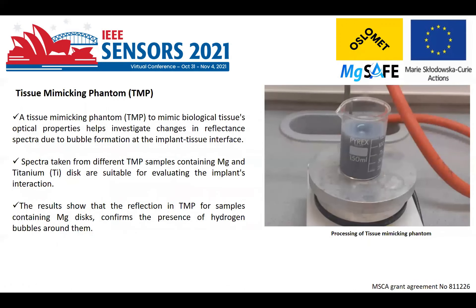that can assess the state of magnesium implants degradation when in contact with biological tissues. A tissue mimicking phantom to mimic the optical properties of biological tissues helps to investigate the changes in reflectance spectra due to bubble formation at the implant tissue interface. We have used magnesium and titanium disc for evaluating the implants interaction.